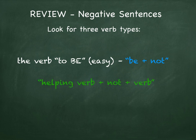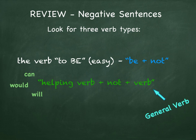Next is the pattern with a helping verb such as can, will, or would, and a general verb — take, walk, imagine. These are the main verbs we use. For example, we could say: I cannot imagine living on a ship.